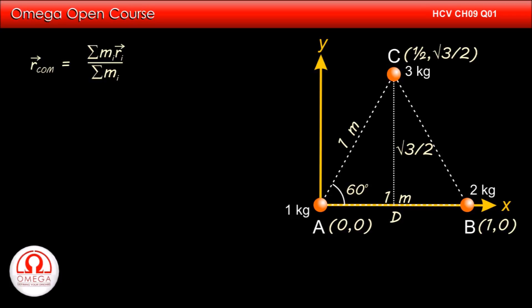The x coordinate of the 1 kg particle is 0, the 2 kg particle is 1, and the 3 kg particle is 1/2. Therefore, x coordinate of center of mass is (1×0 + 2×1 + 3×1/2)/(1+2+3). Simplifying, we get x coordinate of center of mass as 7/12.